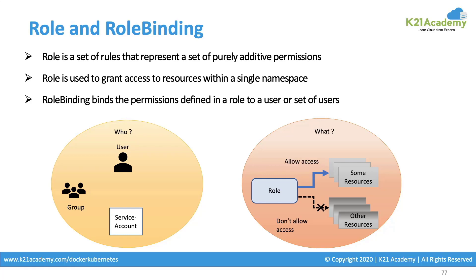If I specify I can execute actions on deployments and volumes, I would not be able to work with config map, secret, or any other kind — only with deployment, pod, service, or PVC kinds. Whatever you specify in the role, only those accesses are given; the rest are all denied.